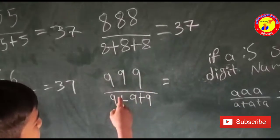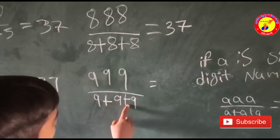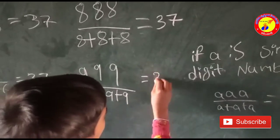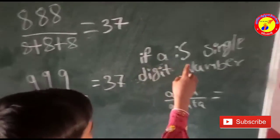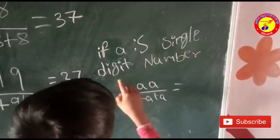999 divided by 9 plus 9 plus 9 is equal to 37. If A is a single digit number, this pattern holds.